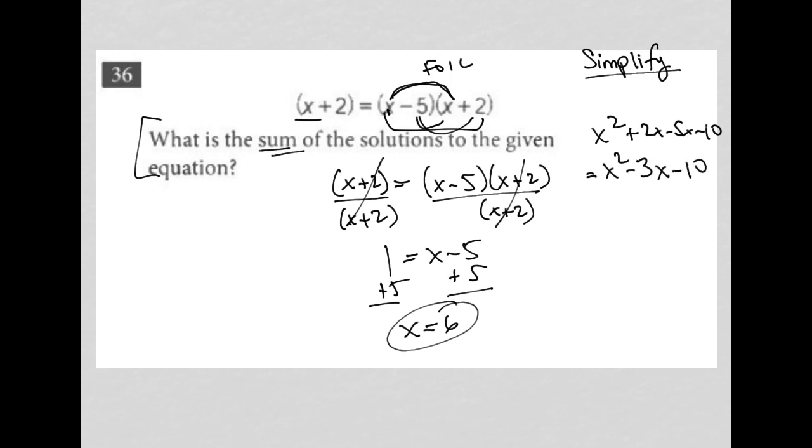I still have this x plus 2 on this side, so I'm going to integrate that to the right-hand side by subtracting 2 from both sides and subtracting x from both sides. So here, I end up with 0 equals x squared minus 4x minus 12.